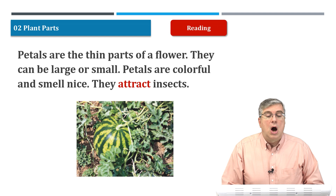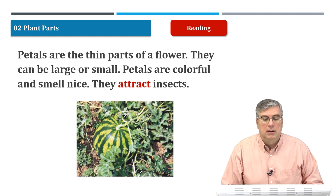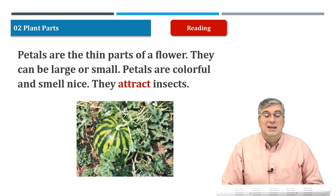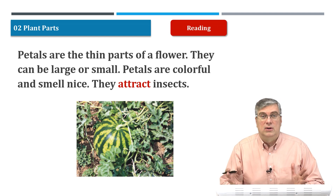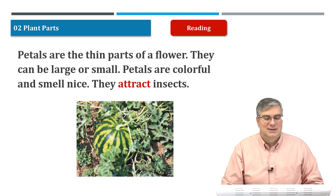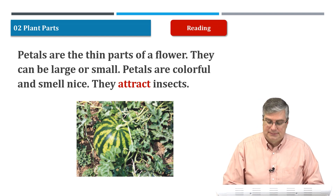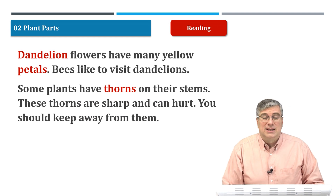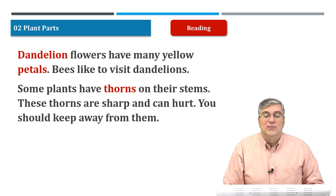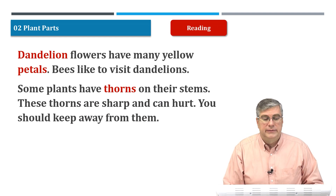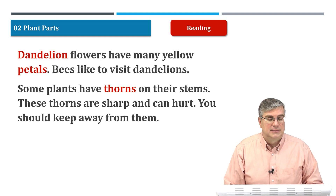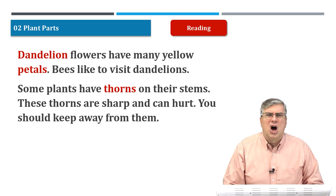Petals are the thin parts of a flower. They can be large or small. Petals are colorful and smell nice. They attract insects. Dandelion flowers have many yellow petals. Bees like to visit dandelions.